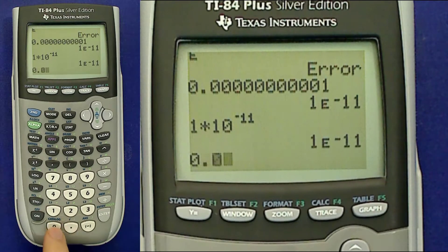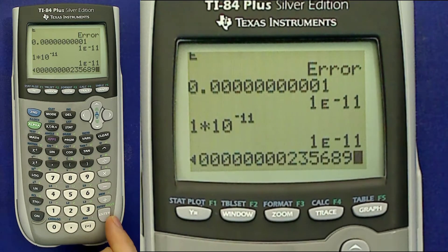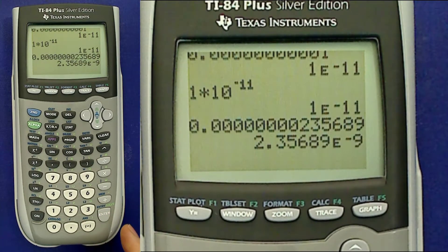To give you another way of looking at this, suppose I do this: 0.000 lots of zeros 235689. The calculator expresses that in scientific notation as 2.35689 times e to the negative 9.